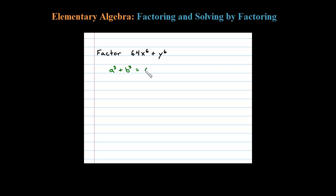The formula is: a cubed plus b cubed factors as a plus b times a squared minus ab plus b squared. So it's just a matter of identifying a and b.